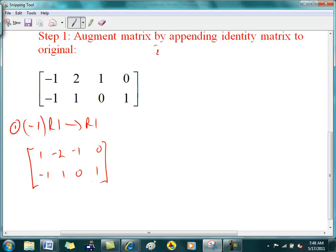Step two, I'm going to make this guy, this minus one, zero, by doing R1 plus R2 into R2. So then I get one, minus two, minus one, zero, this guy becomes a zero, this guy becomes a minus one, this guy becomes a minus one, this is a one.